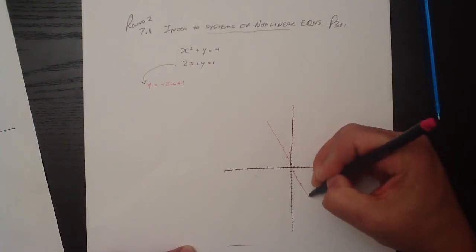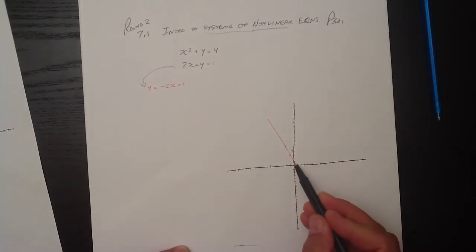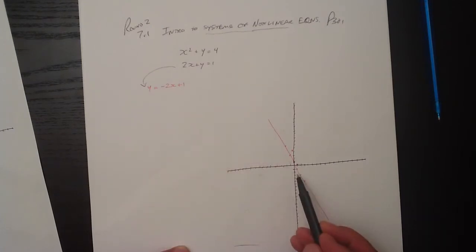It's got a slope of 2, so it's relatively steep. And it's a straight line with a y-intercept at y equals 1. So that's y equals negative 2x plus 1, graphed on this graph.